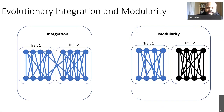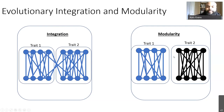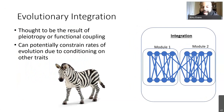The second case is modularity. At first glance, modularity might look like the opposite of integration. However, I would argue it's actually a special case of integration where individual traits are integrated amongst themselves. If a mutation occurs in trait one, it's fairly evenly distributed within that trait — but you don't necessarily expect to see it reflected in trait two, because there's little to no crosstalk between traits. This is the key difference between integration and modularity.